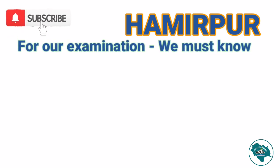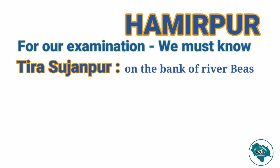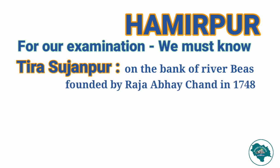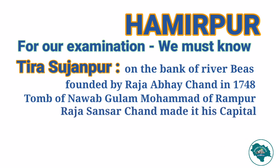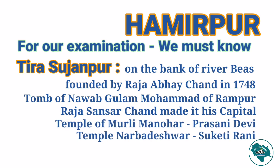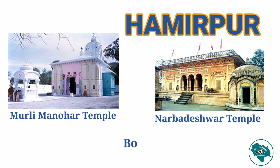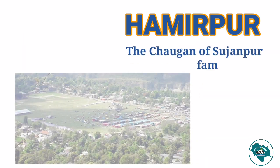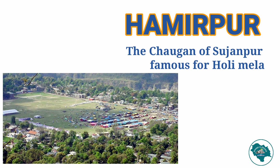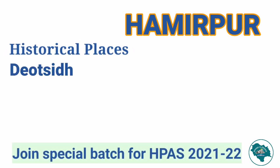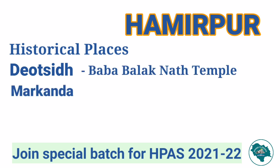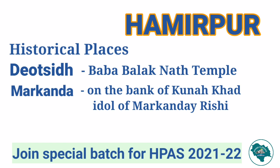For our examination, we must know the places of historical interest. Tira Sujanpur is situated on the bank of river Beas. It was founded by Raja Abhchand in 1748. There is a tomb of Nawab Ghulam Muhammad of Rampur. Raja Sansar Chand made it his capital. The Temple of Murali Manohar was built by Prasanni Devi and the Temple of Narbadeshwar by Sukheti Rani, both Ranis of Sansar Chand. The Chogan of Sujanpur is famous for Holi Mela. Nadan was first visited by a German named Travek and then by a British traveler named Moorcraft. Diyot Sith is famous for Sri Baba Balaknath Temple, and Markanda on the bank of Kunachad is famous for the idol of Markanda Rishi.